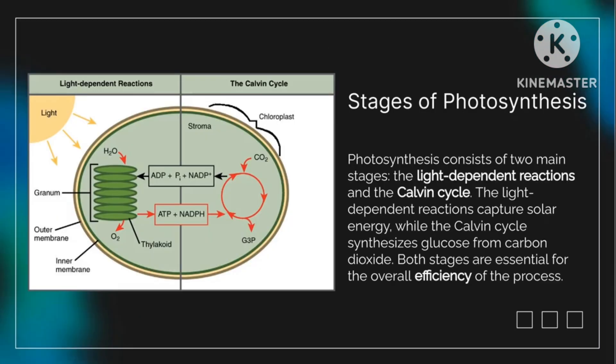Stages of photosynthesis. Photosynthesis consists of two main stages: the light-dependent reactions and the Calvin cycle. The light-dependent reactions capture solar energy, while the Calvin cycle synthesizes glucose from carbon dioxide. Both stages are essential for the overall efficiency of the process.